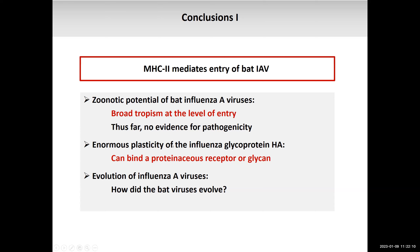We concluded that MHC class II mediates entry of bat influenza A viruses — surprising given decades of research on flu virus entry always pointing to sialic acid. We're also excited by the plasticity of this HA protein: it can bind either a proteinaceous receptor or a glycan even though the overall structure is very similar. This raised interesting questions about the evolution of influenza A viruses. Where do these bat viruses come from? Are they older, with the regular viruses having lost MHC class II entry and developed sialic acid-based entry? Or was there an ancestor that could use both? This is what we wanted to test.